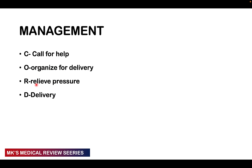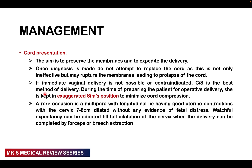For management, use the mnemonic CORD: C — call for help; O — organize for delivery; R — relieve the pressure; D — conduct the delivery. Beginning with cord presentation, the aim is to preserve the membranes and expedite labor. Do not attempt to replace the cord as this is not effective, will rupture the membranes, and can lead to overt prolapse. If immediate vaginal delivery is not possible or is contraindicated, cesarean section can be done, and during preparation the patient is kept in the exaggerated Sims position to minimize cord compression.